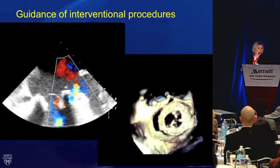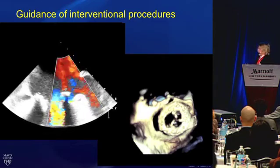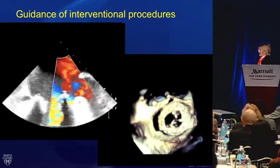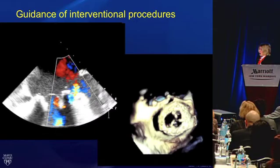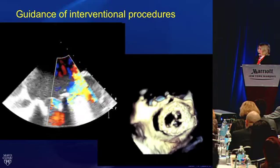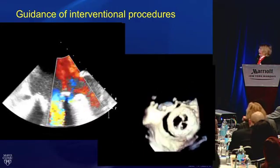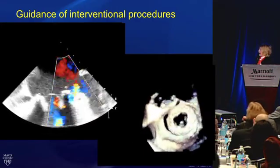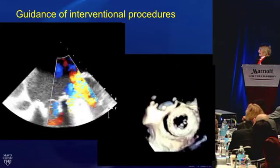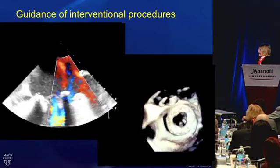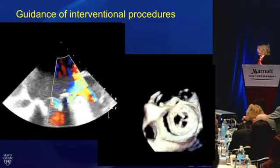Echocardiography is valuable for guiding interventional procedures. Here we can see periprosthetic mitral regurgitation in a patient referred for percutaneous closure of a paravalvular leak. But with three-dimensional echocardiography, we can see that this is not suitable for percutaneous closure with a device because there is a very large crescenteric defect.